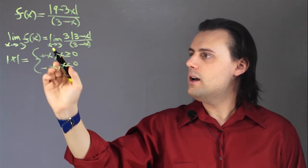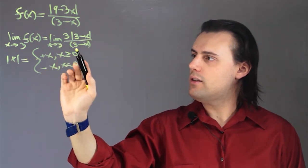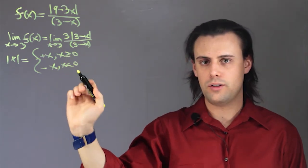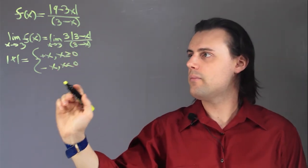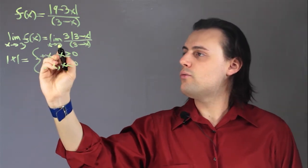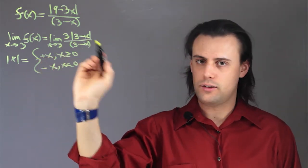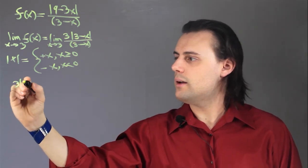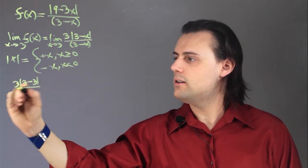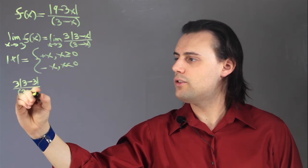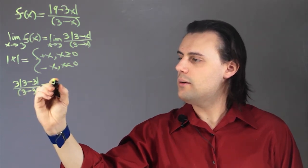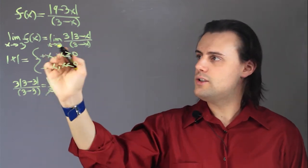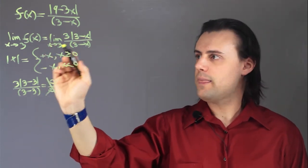I have to examine the value of this function as I approach either from the positive side or from the negative side of 3. If I were to naively plug in 3 into this function, then I would get 3 times 3 minus 3 divided by 3 minus 3, and I would end up with 0 over 0, and this isn't defined, which is why we're taking the limit.